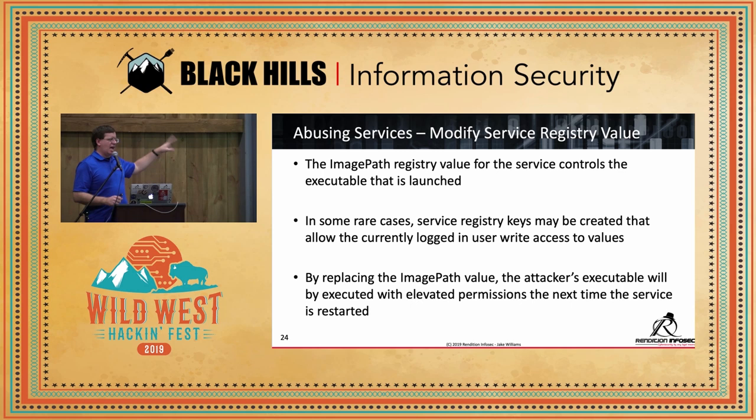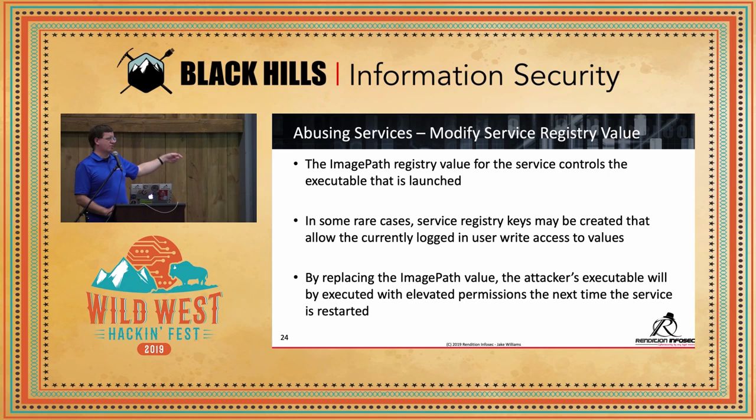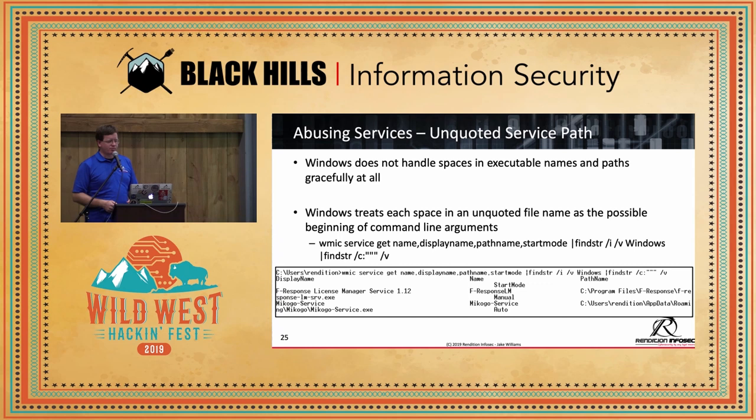When you replace the image path value, the attacker's executable gets executed with elevated permissions the next time the service is restarted. There's a caveat: the Service Control Manager won't automatically re-read the registry. If you use service controller API calls, you get it the next restart automatically. Otherwise you get it on the next reboot. The Service Control Manager reads those keys once at boot. Either way, you'll still get it on the next reboot.